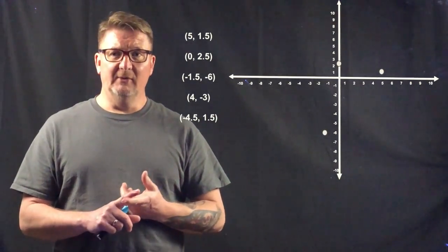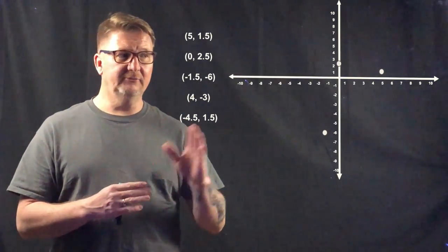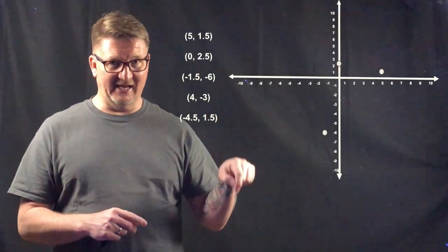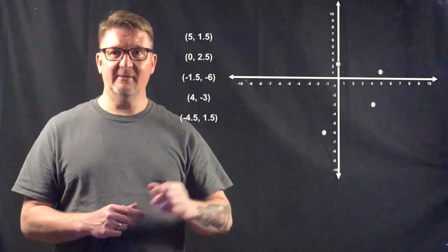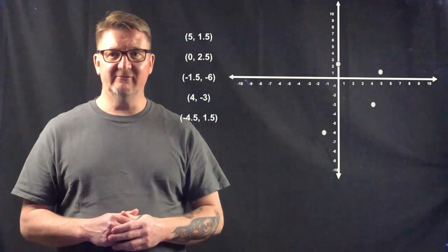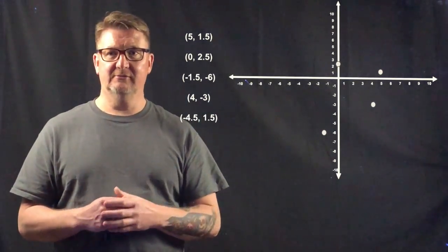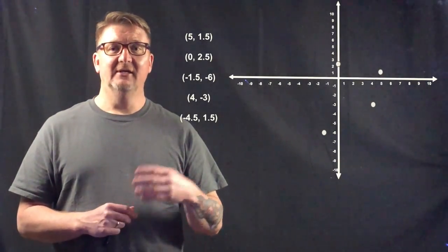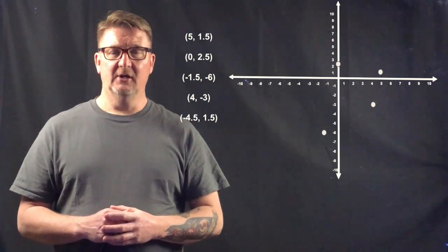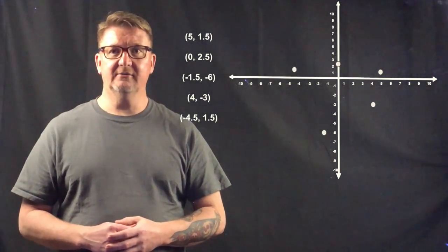We have (4, -3). The x-coordinate is 4 — it's positive, so we go to the right 4 places. The y-coordinate is -3, so we go down 3 places, and that's where that point goes. And finally, the last one is (-4.5, 1.5). Because the x-coordinate is negative, we go to the left 4 and a half places. The y-coordinate is positive, so we go up 1.5 places. And that is all the points for this polygon graphed.